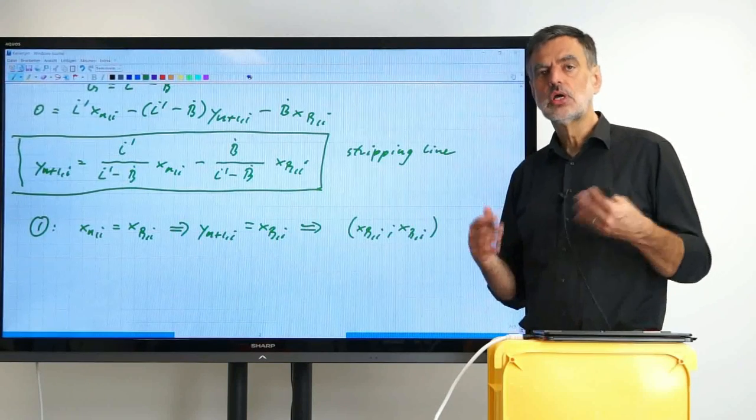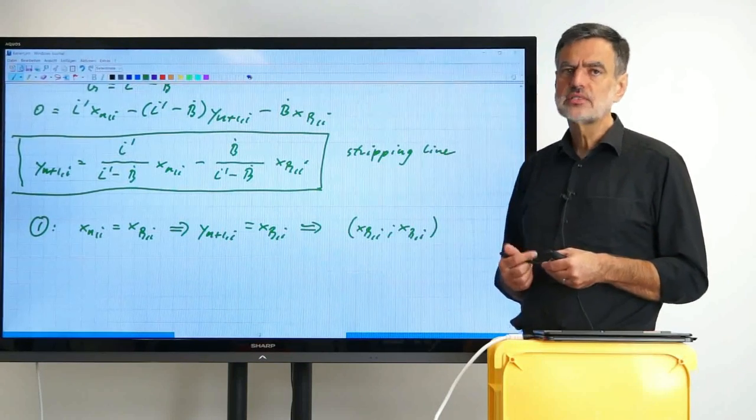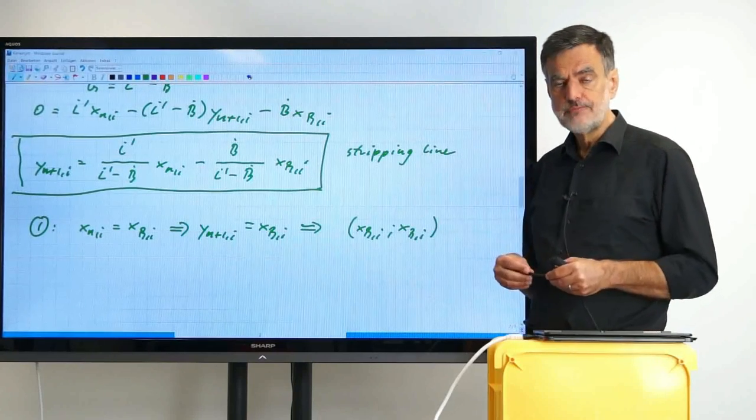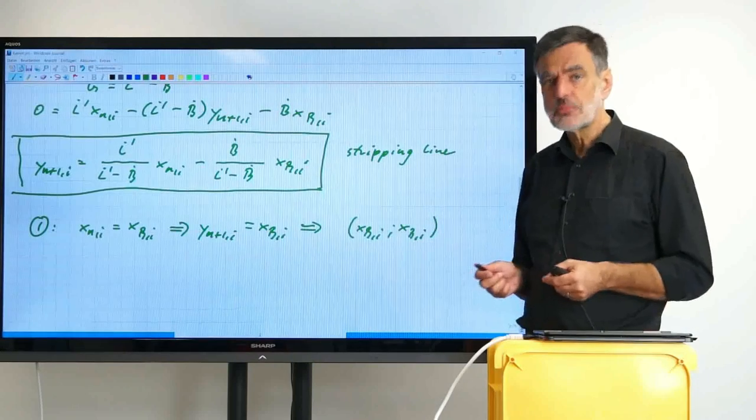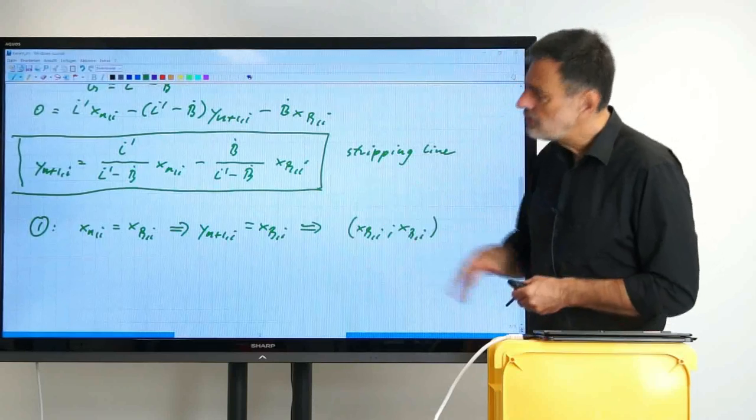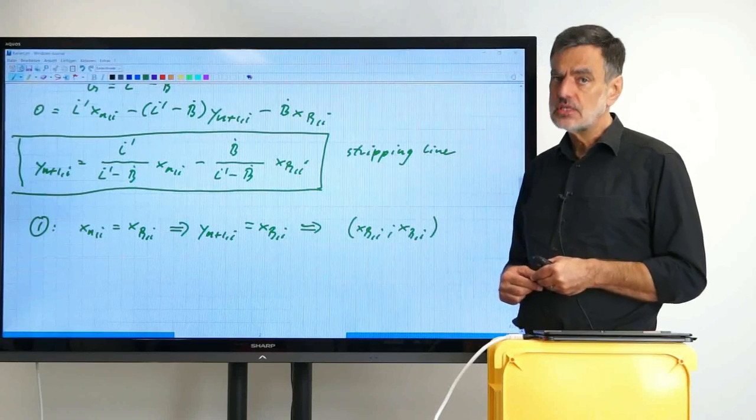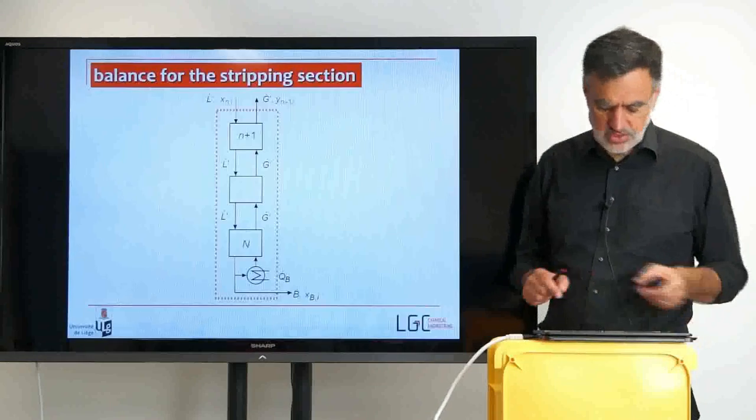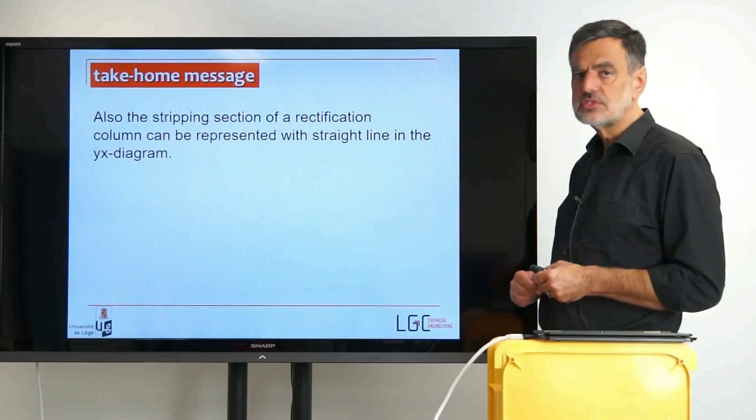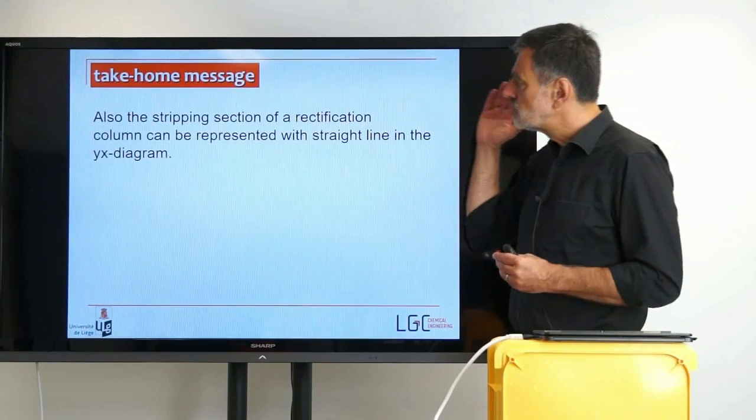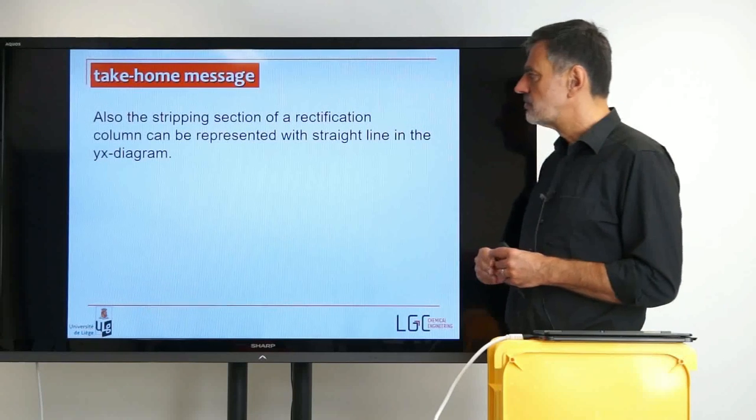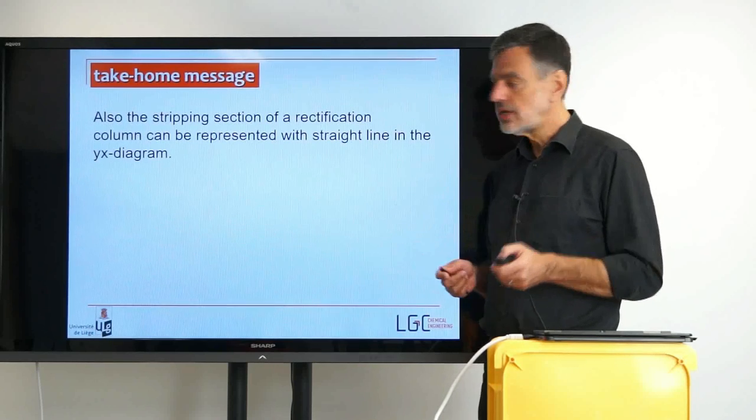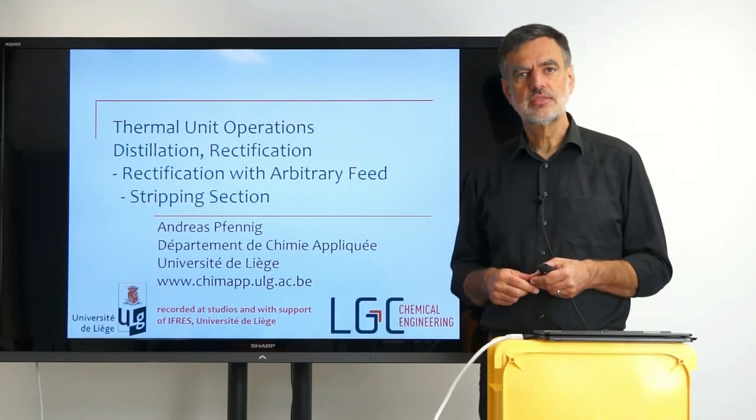Unfortunately, for determining the second point, we need quite some considerations about enthalpy, energy, and things like that for the feed. That's a little bit lengthy, so I put that into a separate video. The second point is to be determined in the next lecture. With that, I would like to return to the presentation and summarize what we have seen. We saw that also the stripping section of the rectification column can be represented with a straight line in the Y-X diagram. With that, I would like to thank you for this lecture and see you again in the next video.